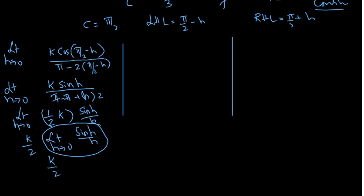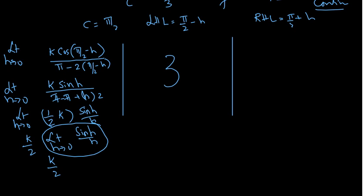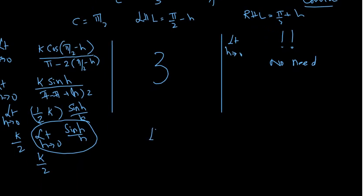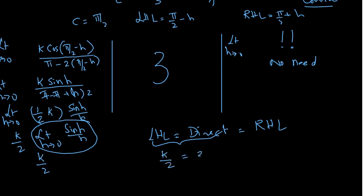Now for the direct value, f(π/2) = 3. You do not actually need to separately compute RHL since the function is given continuous — you just equate LHL to direct value. So equating k/2 equals 3, that gives k equals 6.